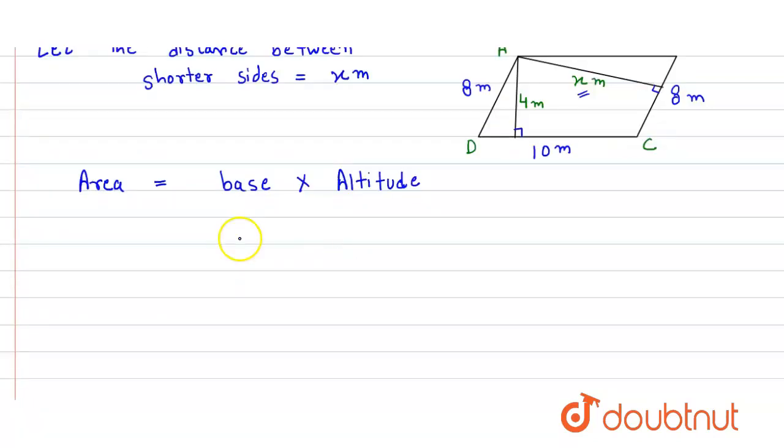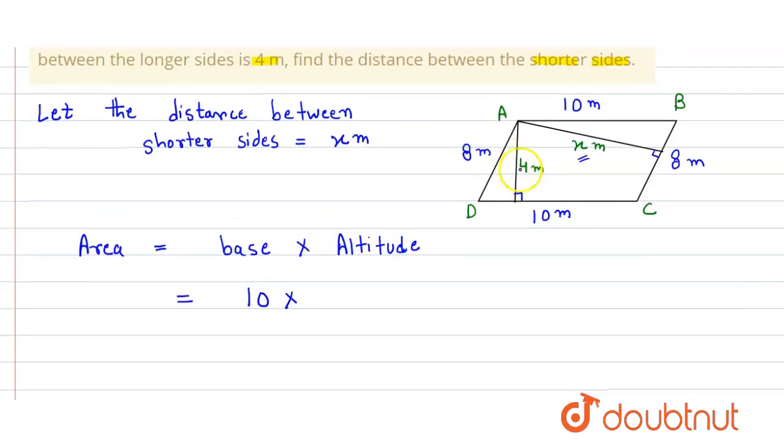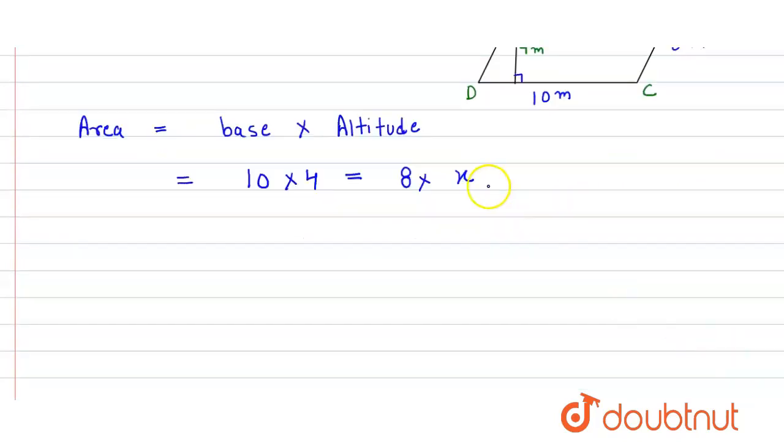So here we get base is 10 times altitude 4 with respect to the longer side, and that equals the shorter side 8 times altitude x with respect to the shorter side. So here it is x. So now we simply use this expression to find out the value of x.